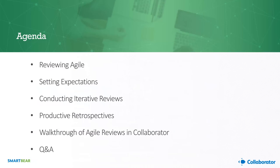Here's the agenda: we're going to quickly review Agile for anyone who might not be familiar, though we won't spend too much time there. Then we'll talk about setting expectations and roles, conducting iterative reviews, productive retrospectives, and walk through an agile review in Collaborator to show how our tool can enable teams to really take their agile approach to code reviews in a meaningful way. At the end, feel free to put questions in the chat box.